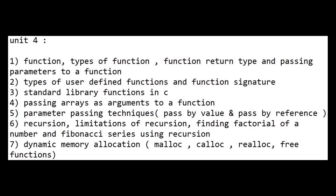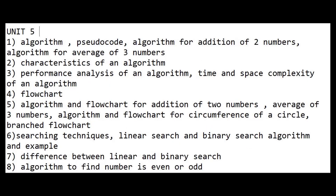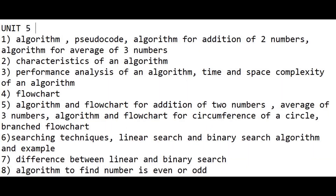If you don't have time, just prepare types of user-defined functions — that is the second question — and the fifth, sixth, and seventh questions: parameter passing techniques, recursion with factorial and Fibonacci series, and dynamic memory allocation. Those are four questions from unit four. For unit five, there are 19 total questions; if you don't have time, just learn questions one through five.